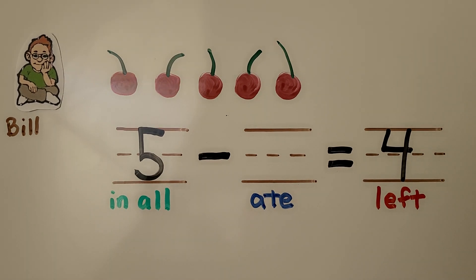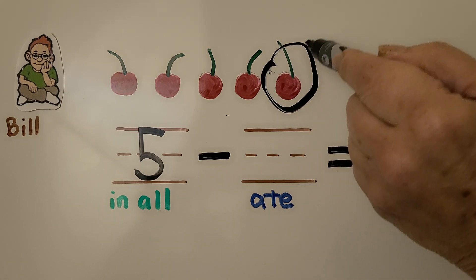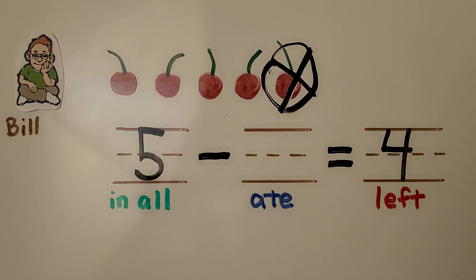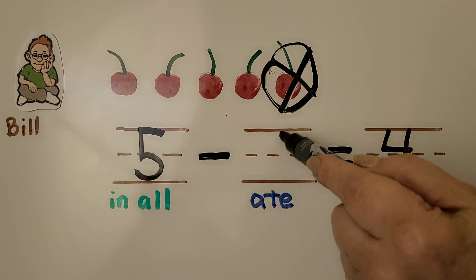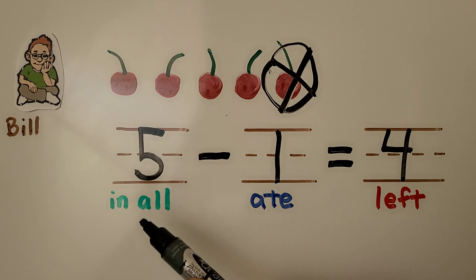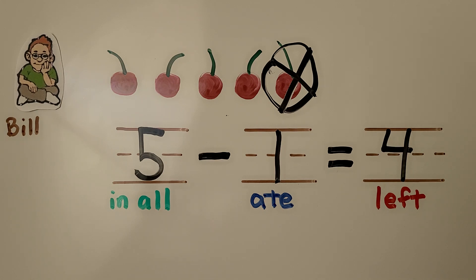There are five cherries in the set, and there are supposed to be four left. We can circle and cross off one cherry, and then there will be four left. We needed to circle and cross out one cherry for there to be four left — that means he ate one. Five minus one is equal to four.